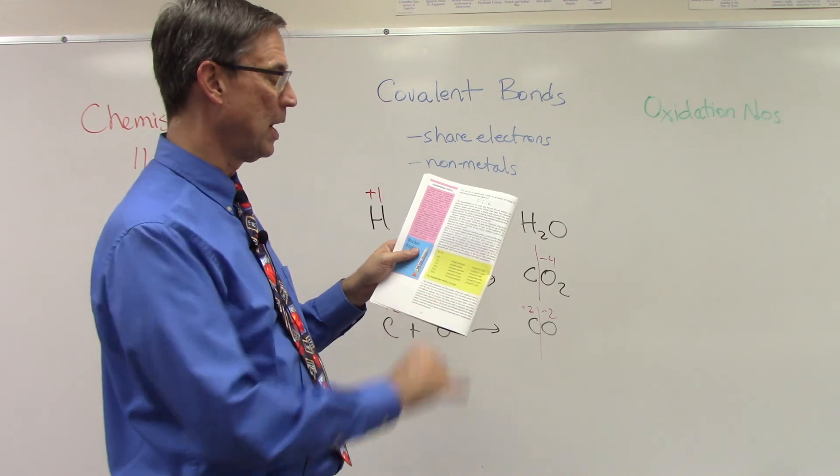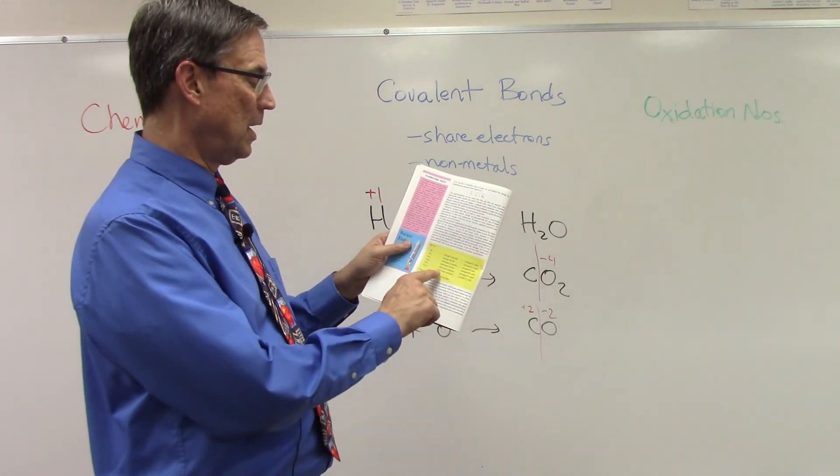Nitrogen dioxide. Since we know that the charge must be four on that nitrogen, we would insert the Roman numeral four in the name. So nitrogen, Roman numeral four, oxide.